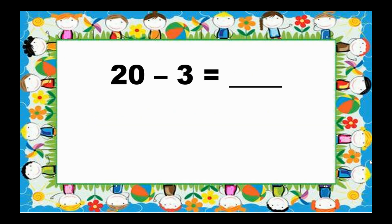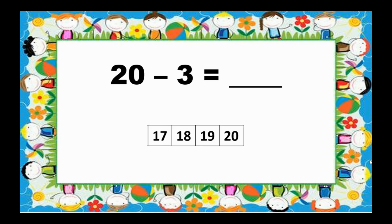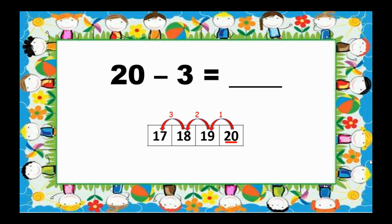Let's have another one. 20 minus 3. Let's start from 20 and count back 3 times. 20, 19, 18, 17. So, 20 minus 3 equals 17.